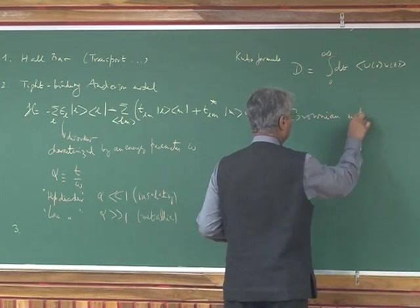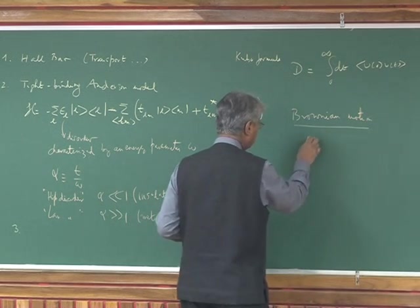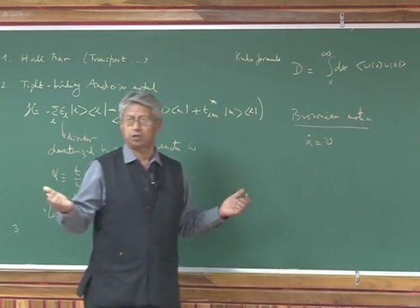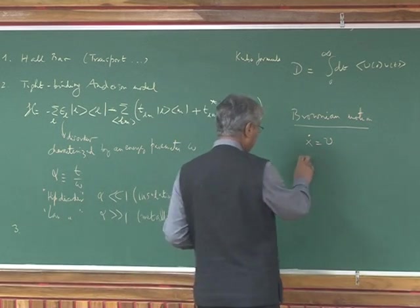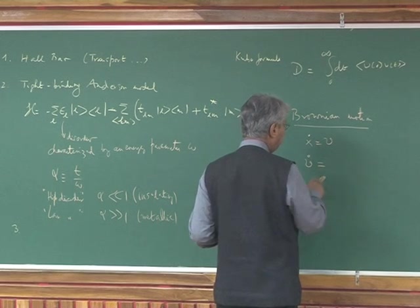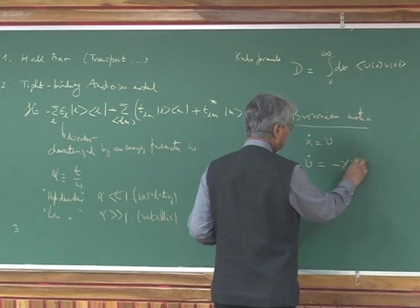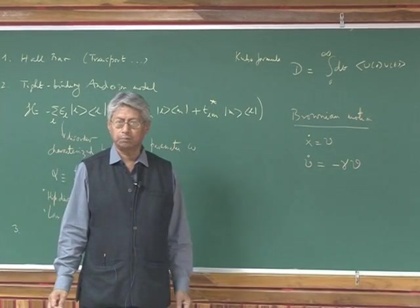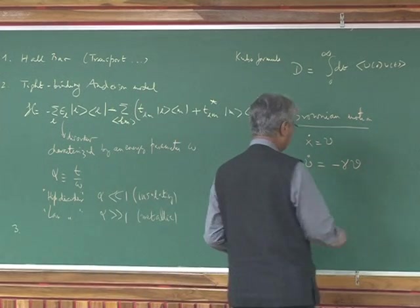The first equation you can write down is x dot equals v—just the definition of velocity. Rate of change of position is velocity. V dot, for a free particle with no force, but v dot has a damping term—this is the Stokes equation—minus gamma v. But there's also a noise term, so this is noise.